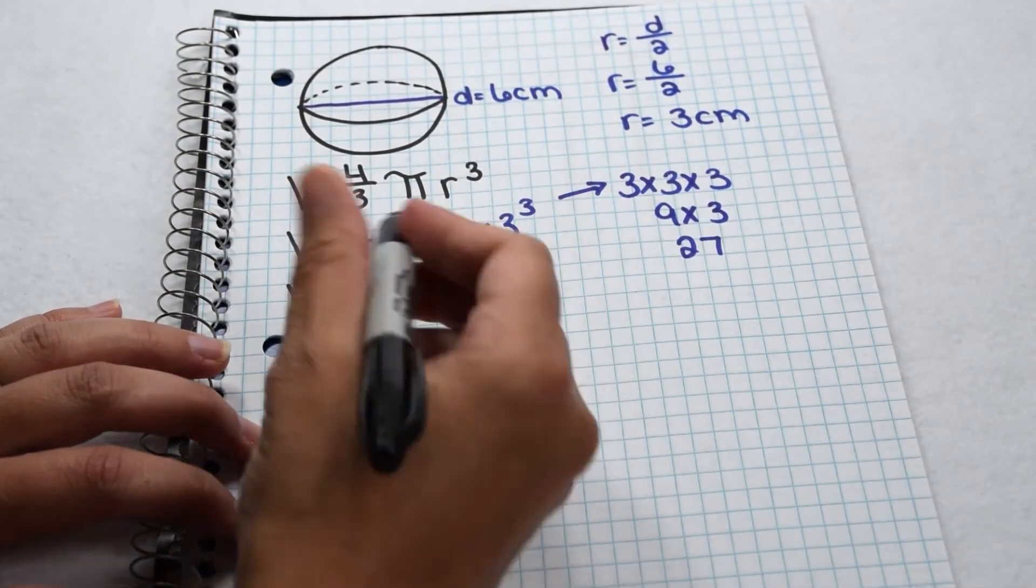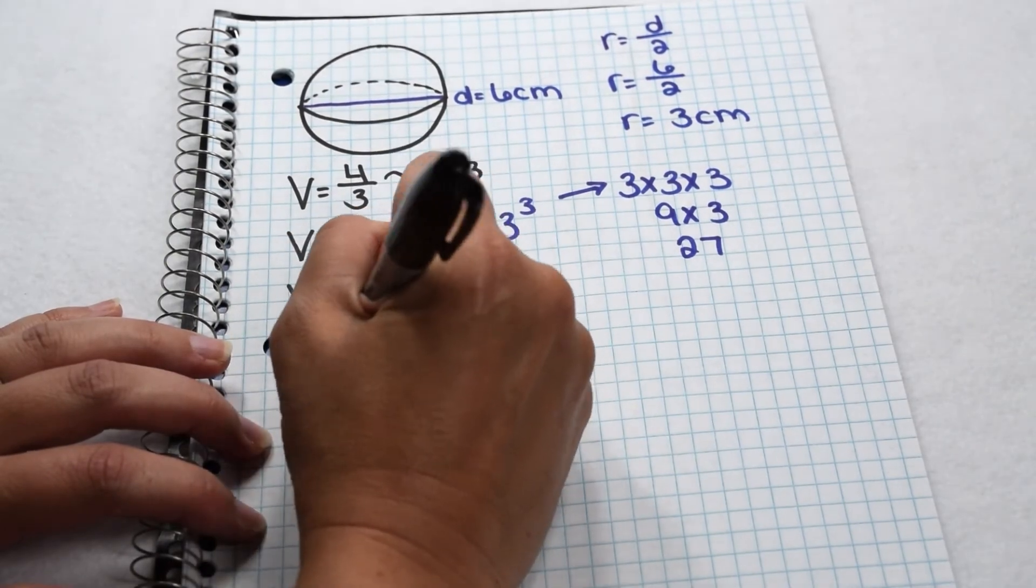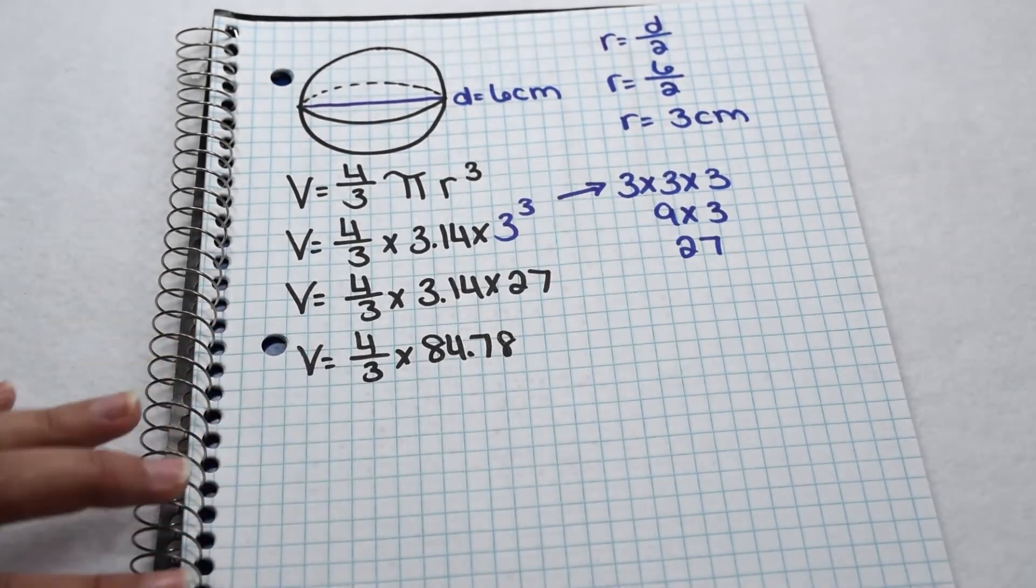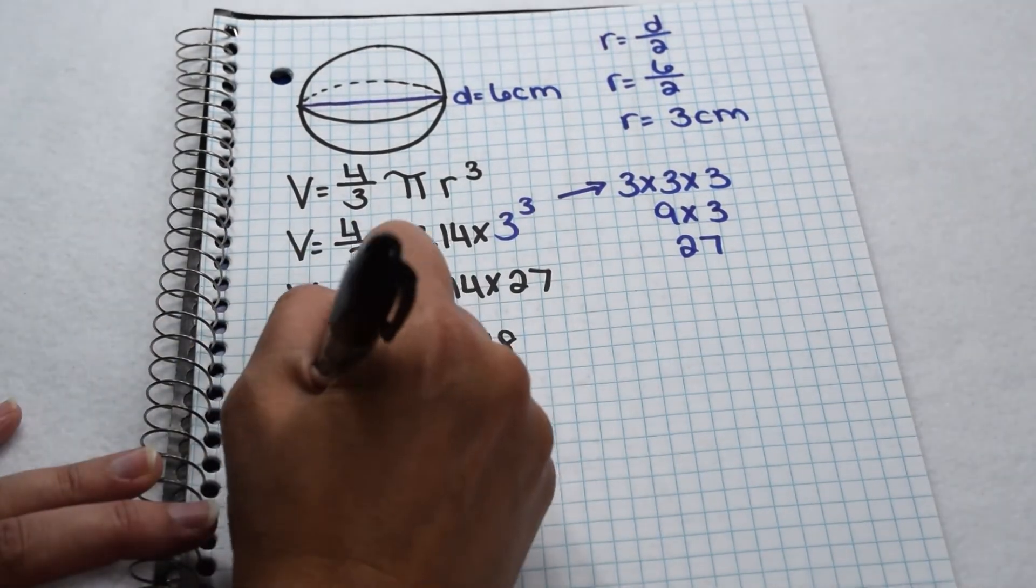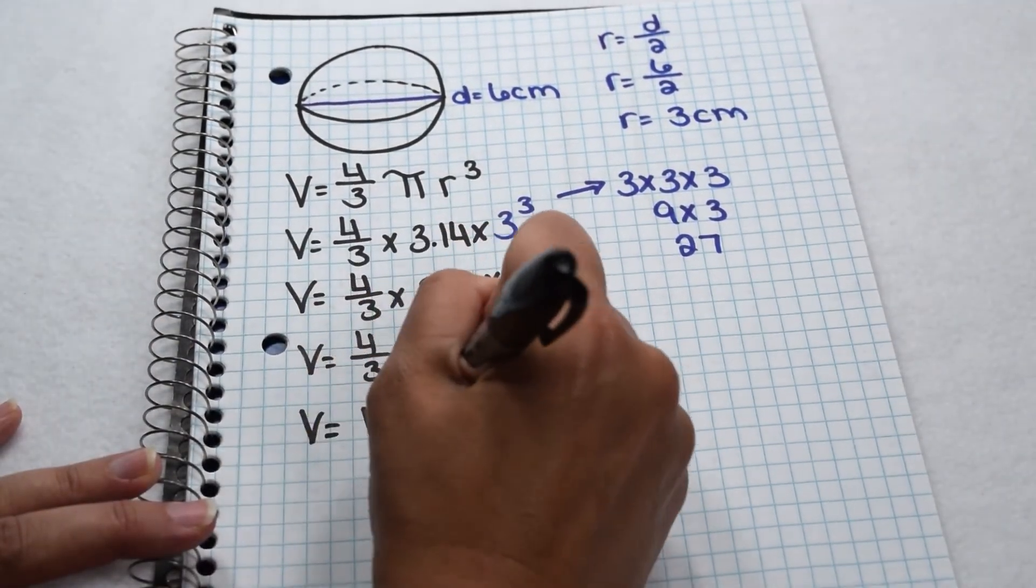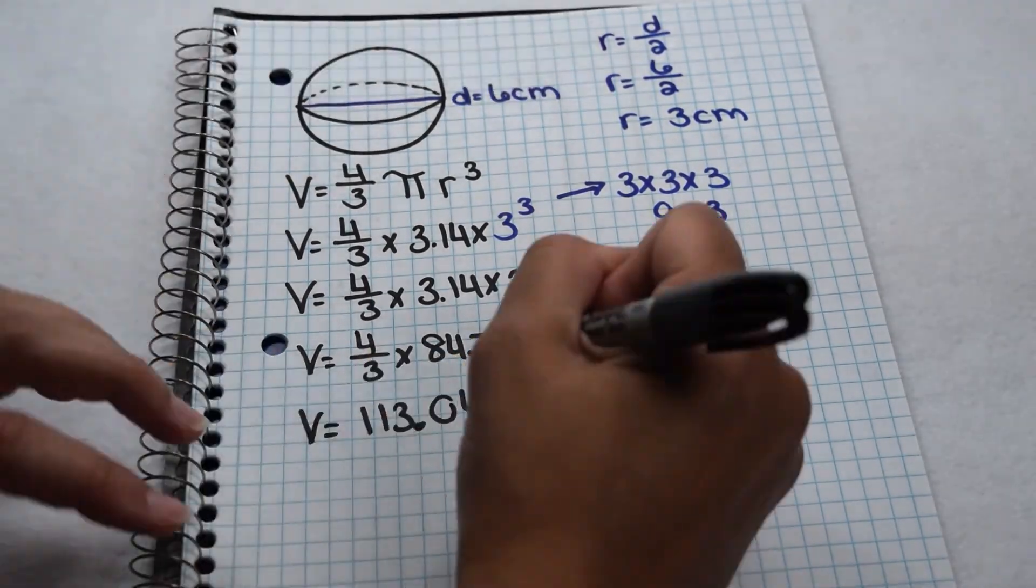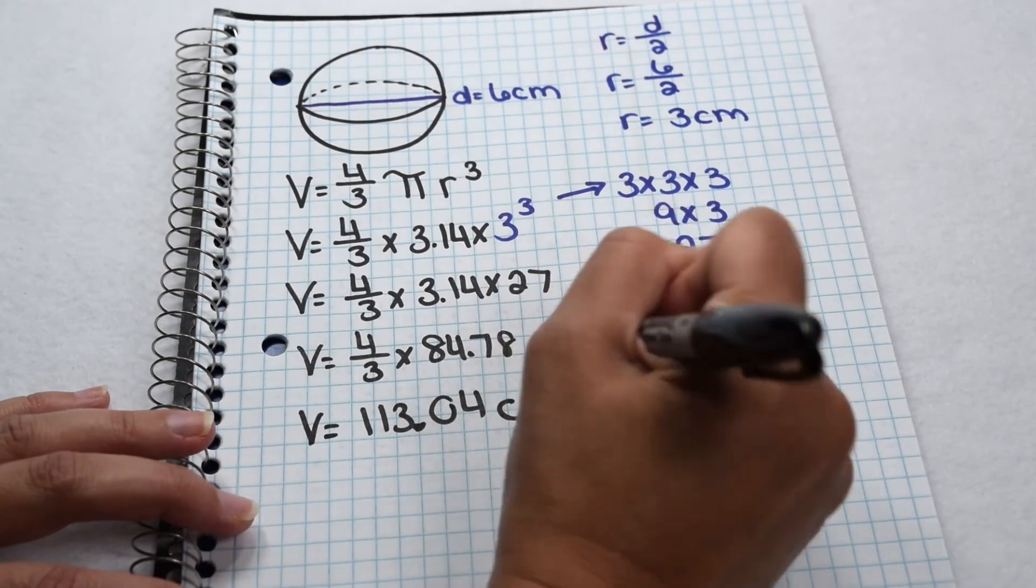We can multiply in any order, so we're going to go ahead and do 3.14 times 27. That leaves us with four-thirds times 84.78. Multiplying that by four-thirds comes out to give us a total volume of 113.04. This is labeled in centimeters, so this is cubic centimeters.